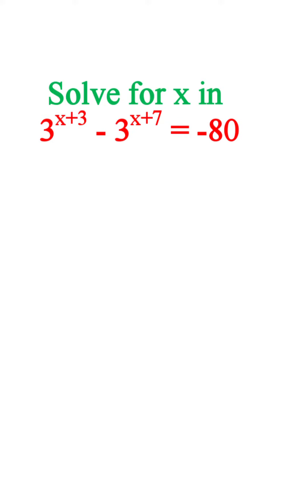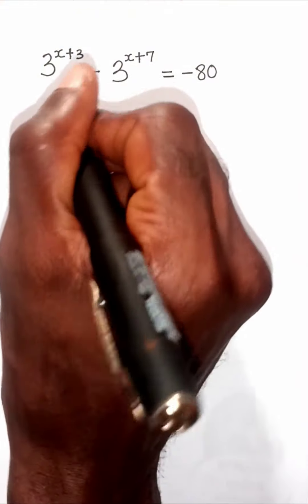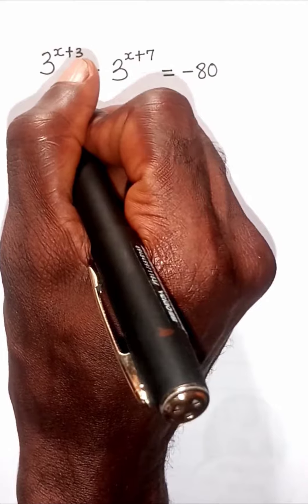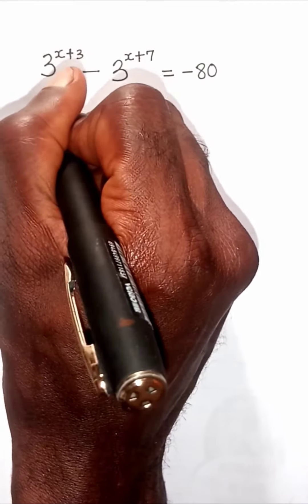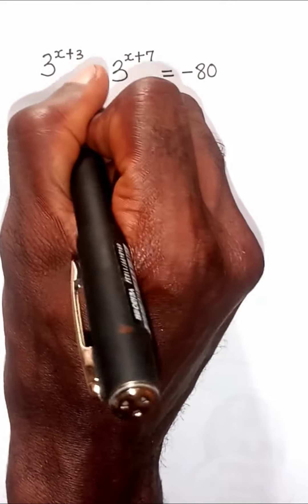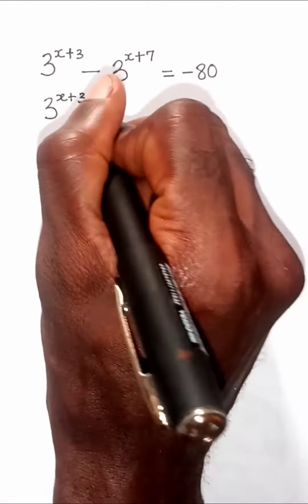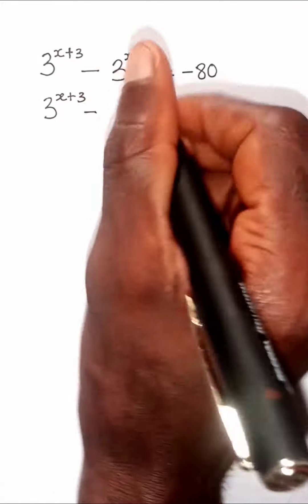Hi there, welcome to this channel again. We have this beautiful exponential equation to solve today: 3 raised to the power of x plus 3, minus 3 raised to the power of x plus 7, equals negative 80.